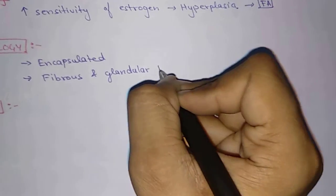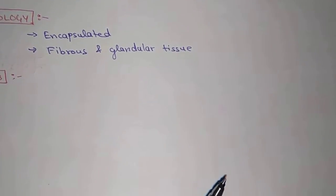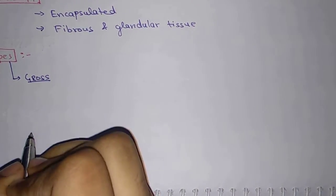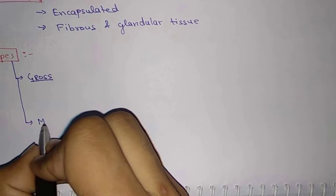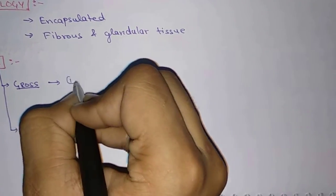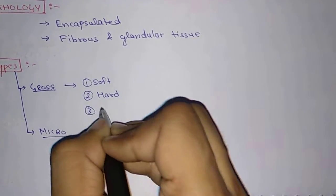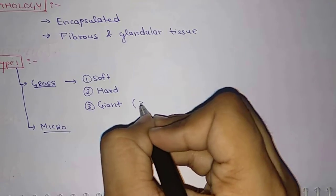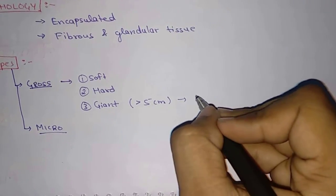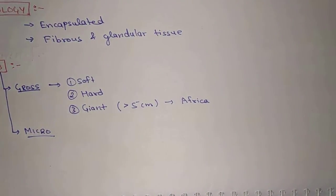Coming to the types of fibroadenoma, we have classified into two types: first is gross and second is microscopy. In the gross type, we have soft, hard, and giant. We call it giant when the size of lump is more than 5 centimeters, and it is most commonly present in Africa.